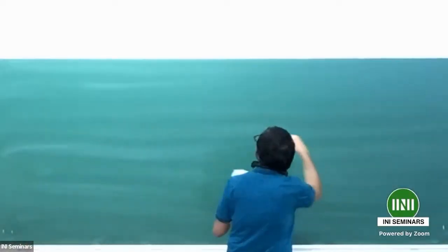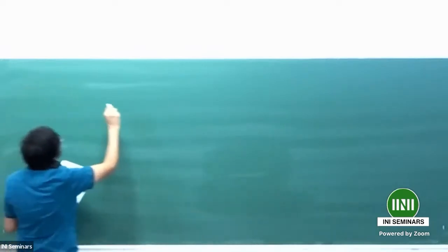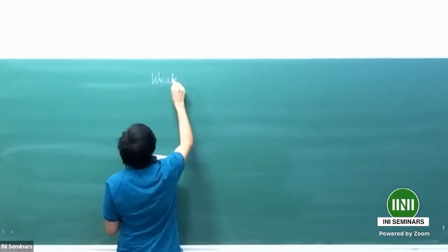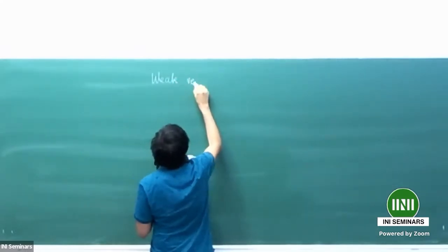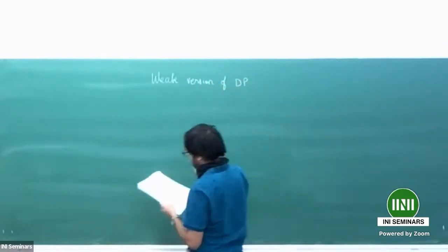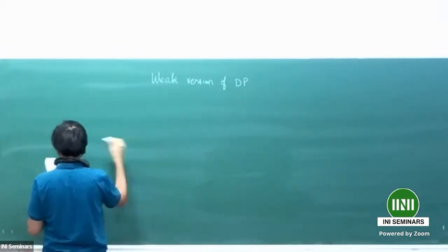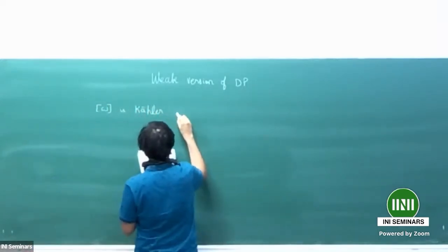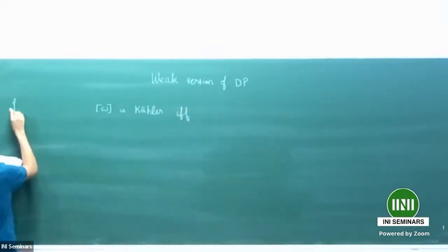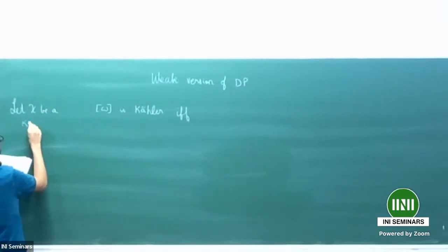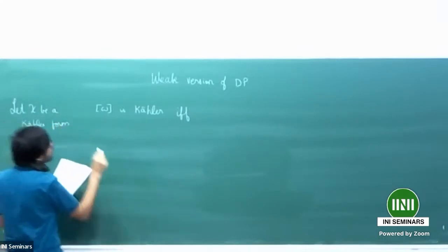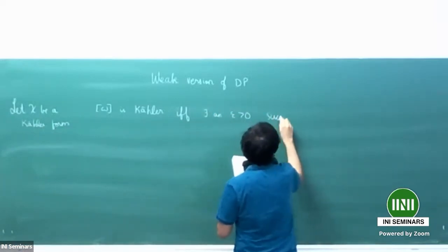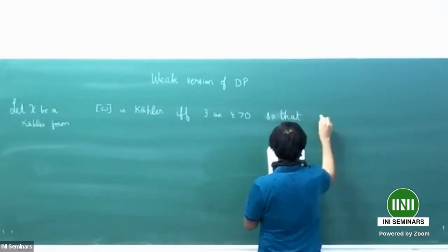Thanks for turning up despite the first lecture. The aim for this lecture is to prove a weak version of the Demailly-Paun theorem. This is: omega is Kähler if and only if — so let chi be a Kähler form — there exists an epsilon greater than zero such that the integral is bounded below.